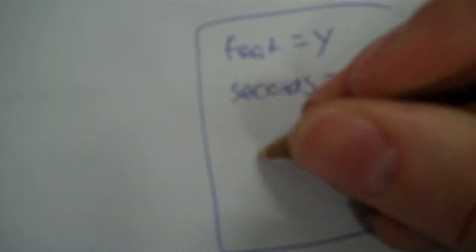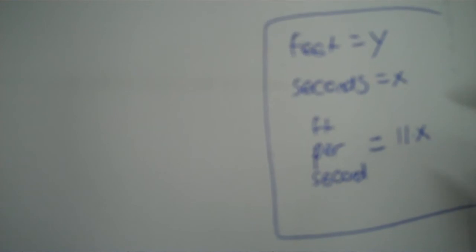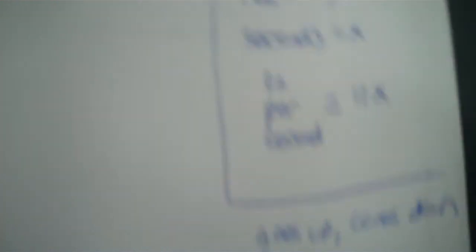A cat leaps from the ground into the air with an initial vertical velocity of 11 feet per second. After how many seconds does the cat land on the ground? Feet and seconds — seconds is x, feet is y, feet per second is 11. We are not going to make a table. Tables only work when it just goes either up all the time or down all the time — the cat goes up, but then comes down. So no table; you make a graph where he goes up, reaches a maximum point, and comes down.